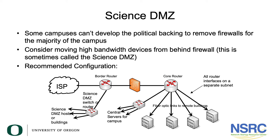A final idea and concept about firewalls: if the politics don't allow you to move the firewall simply to protect your servers, but you have things that need better access to the internet, you can run through your firewall. There's a concept called the Science DMZ. The notion of a Science DMZ is to remove devices in the path from end users to the internet that interfere with the flow of packets.